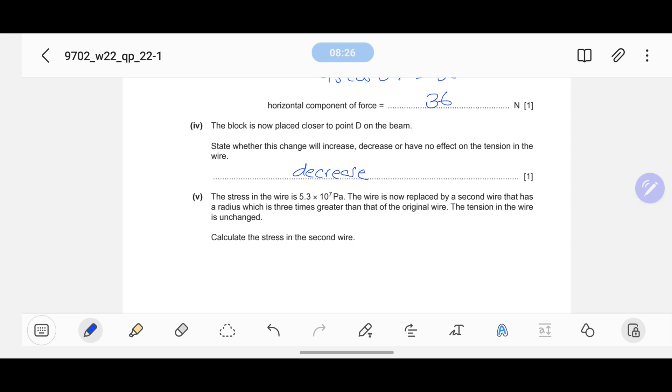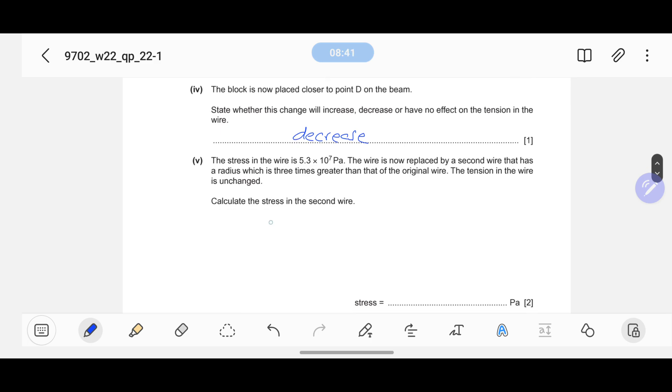If the distance has been decreased, hence force will also decrease. The stress in the wire is 5.3 × 10^7 Pascals. The wire is now replaced by a second wire that has a radius which is three times greater than that of the original wire. So initially the area was πr², now the area is π(3r)², so now the area is 9πr².